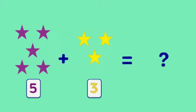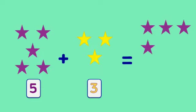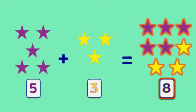One, two, three, four, five. Five stars plus one, two, three—three stars equals how many stars? Count all together. One, two, three, four, five, six, seven, eight. There are eight stars. Five plus three equals eight.